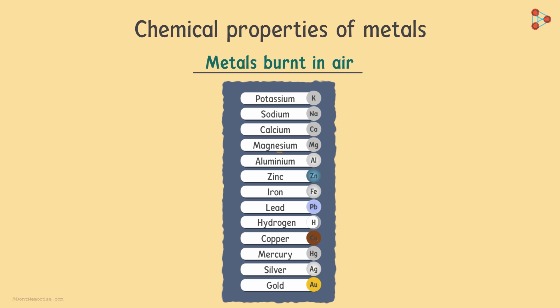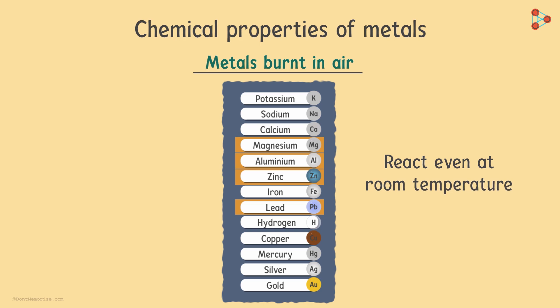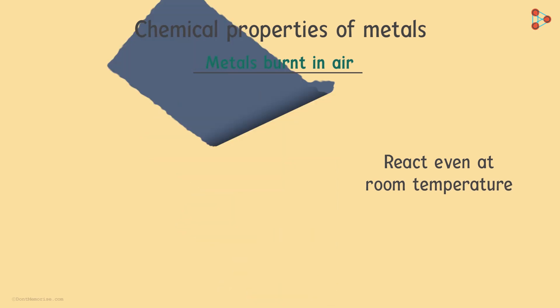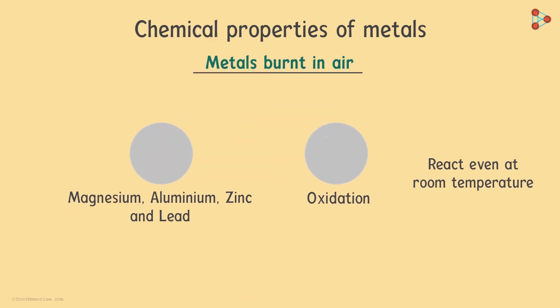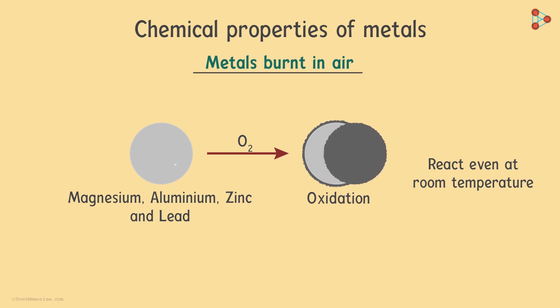Metals such as magnesium, aluminium, zinc and lead also react with oxygen at room temperature, but they react a bit differently. When they react with oxygen, their surfaces get covered with a thin protective layer of oxide. This layer protects the inner part from being oxidized.